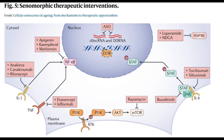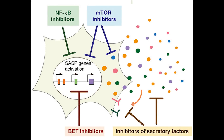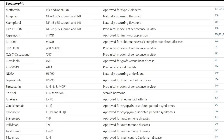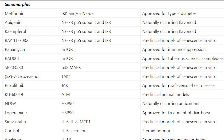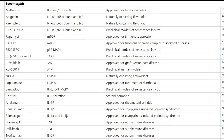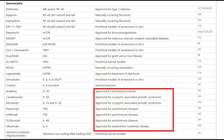Rapamycin is thought to achieve lifespan extension in part by reducing the inflammatory phenotype of senescent cells. Another agent worth mentioning is metformin, which is thought to have some senomorphic potential by inhibiting NF-κB — another key protein mediating the upregulation of SASP genes. Both rapamycin and metformin have already been approved for immunosuppression and type 2 diabetes respectively. A table of other senomorphics and their clinical trial status shows that most have either been approved for other diseases or are being tested in preclinical models.